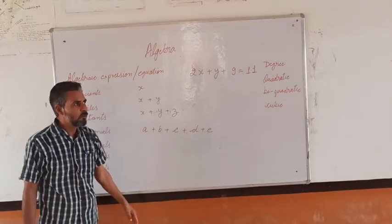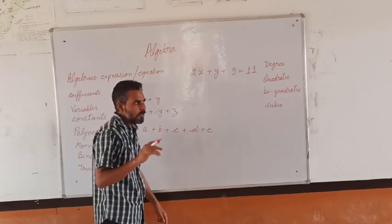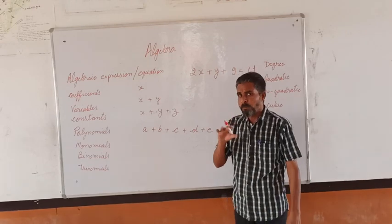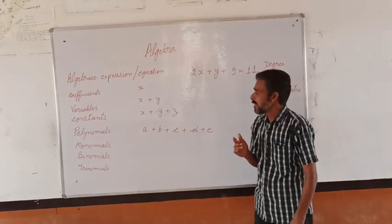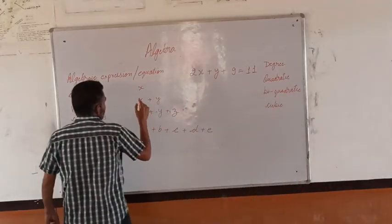Now we have to move forward towards polynomials. Polynomials means a minimum of two terms. Poly plus nomials means expressions having many terms.